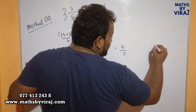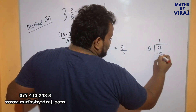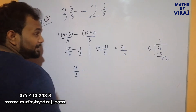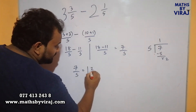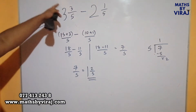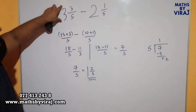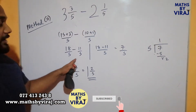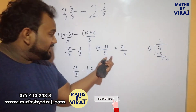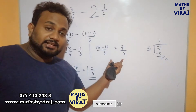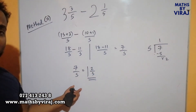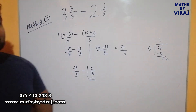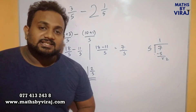When I divide 7 by 5: 5 times 1 is 5, and the remainder is 2. Therefore, I can write 7 over 5 as a mixed fraction, that is 1 and 2 over 5. So: 3 and 3 over 5 was converted into an improper fraction, and 2 and 1 over 5 was also converted into an improper fraction. Then since the denominators are the same, we subtracted the numerators and finally got the answer as 7 over 5, which is an improper fraction. Dividing 7 by 5 gives us 1 and 2 over 5 as a mixed fraction.